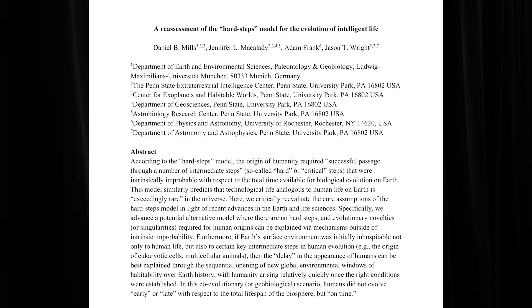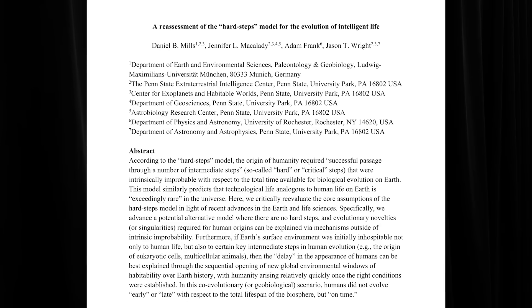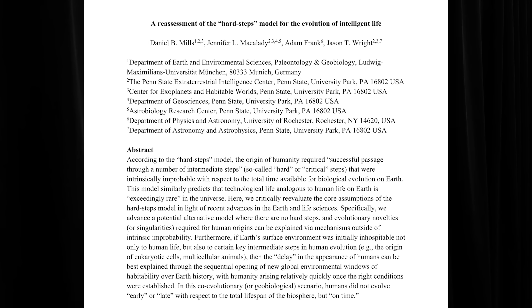I just finished a paper looking at something called the hard steps model — a model that's been out there for a long time which purports to say intelligent life in the universe will be really rare. It made assumptions about Earth's history where the history of life and the history of the planet had nothing to do with each other. It turns out Earth probably had a milder form of plate tectonics early on, and then somewhere about a billion years ago it ramped up and changed everything. The Earth used to be flat — and I mean by that there really weren't many mountain ranges.